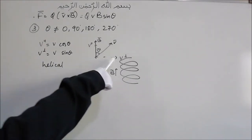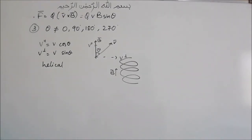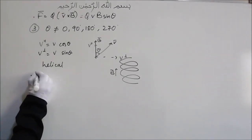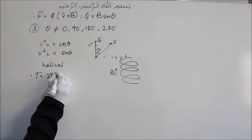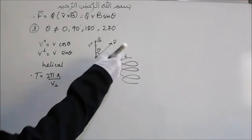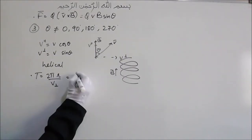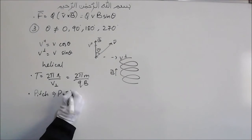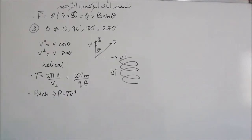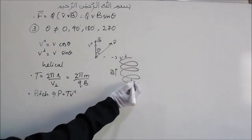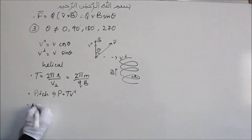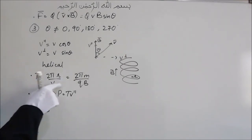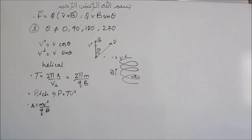Because of these two components of velocity, the path will be helical. The time period of this helical path is given by 2πR / V_perpendicular, which equals 2πM / (QB). The pitch equals T × V_parallel. The radius R of the helical path equals MV_perpendicular / (QB). Remember where we use the perpendicular component and where we use the parallel component.